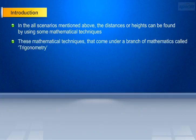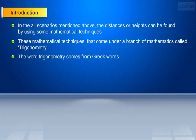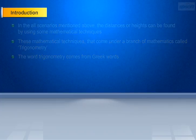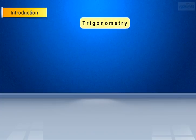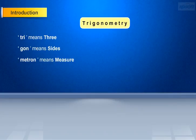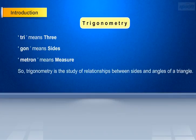These mathematical techniques come under a branch of mathematics called trigonometry. The word trigonometry comes from Greek words. In the word trigonometry, tri means three, gon means sides, and metron means measure. So, trigonometry is the study of relationships between sides and angles of a triangle.